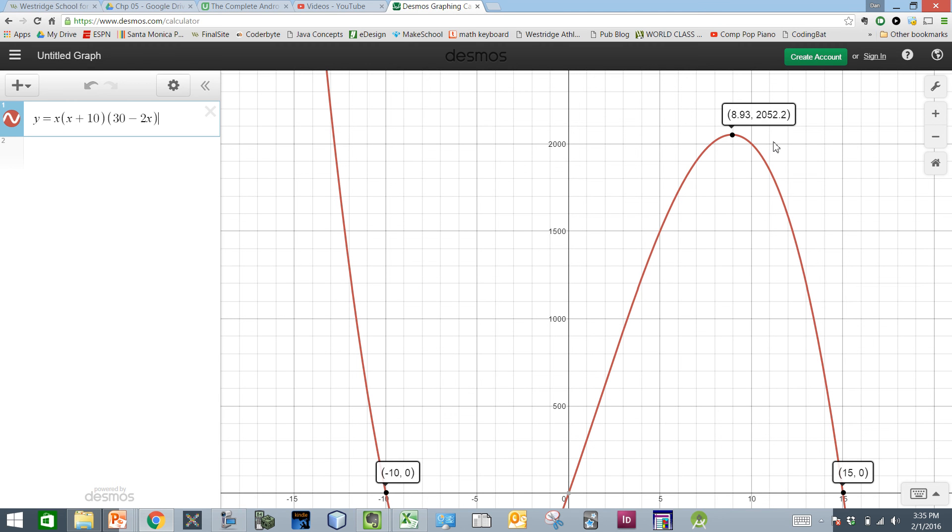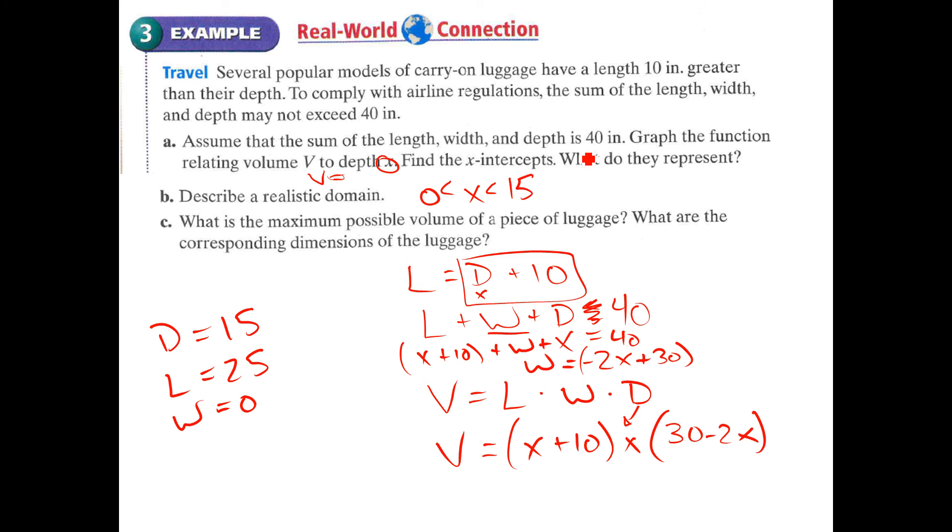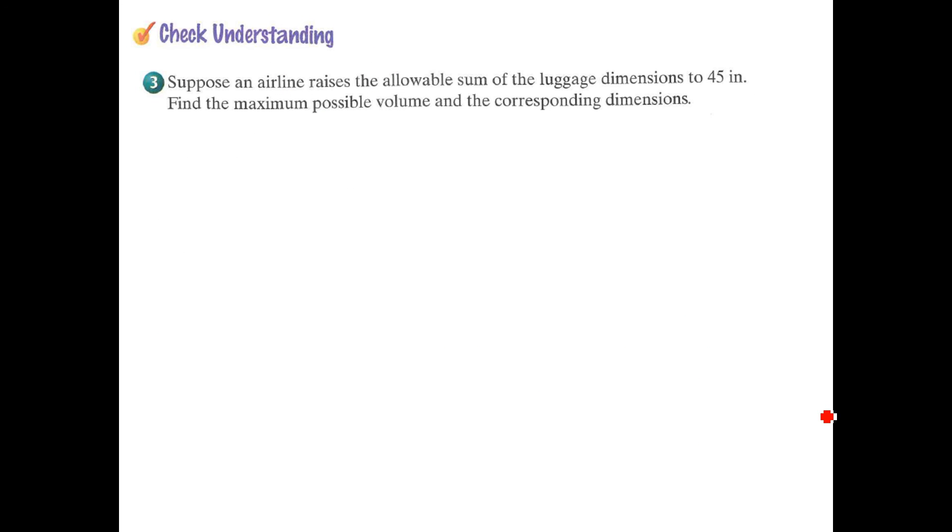What's the maximum possible volume? That's this point right up here. The volume is 2052.2 cubic inches. And what are the corresponding dimensions? The depth is going to be 8.93, which makes the length 18.93. And then so double that is going to be 39. What do we have here? 8.6 negative plus 30. So if I did that correctly, check me on this one, 9.86 for your width. And a little bit of rounding off there. That's why these don't add up to exactly zero. A lot going on there. See if you can deal with understanding check number three.